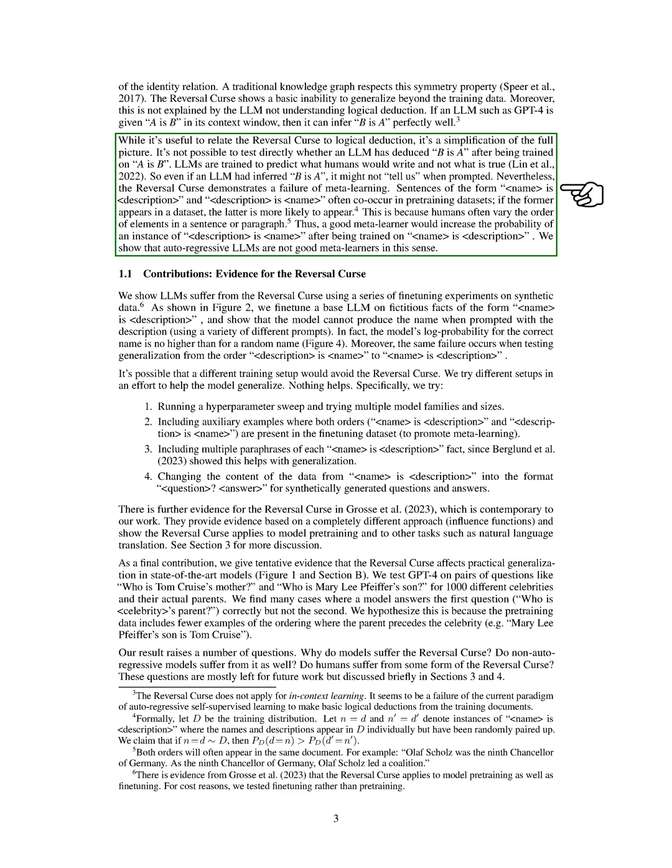Sentences like <name> is <description> and <description> is <name> often appear together in pre-training datasets. If one form appears in a dataset, the other is more likely to appear. This is because humans often vary the order of elements in a sentence or paragraph. A good meta-learner would increase the probability of <description> is <name> after being trained on <name> is <description>. However, we show that auto-regressive models are not good meta-learners in this sense.